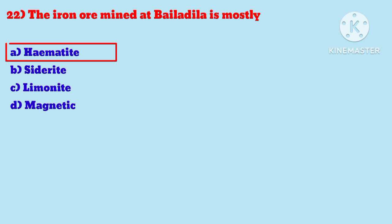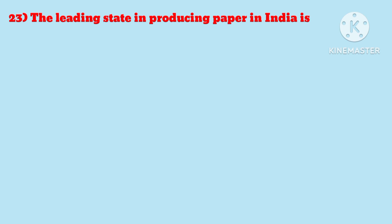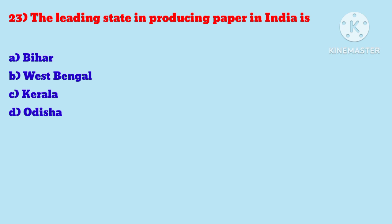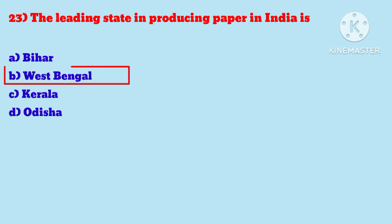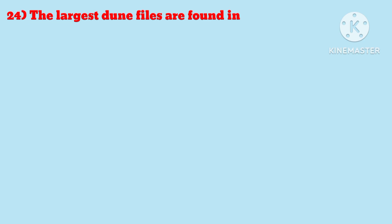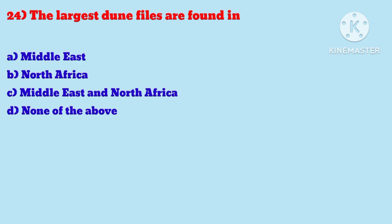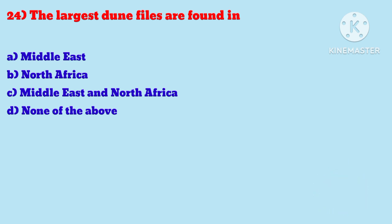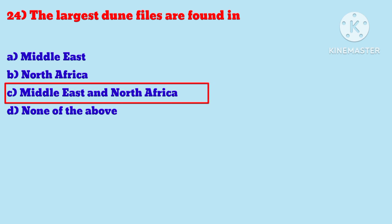Question 22: The iron ore mined at Bailadila is mostly — Answer is hematite. Question 23: The leading state in producing paper in India is — Answer is West Bengal.